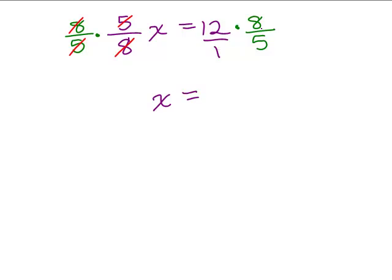So our answer is, when we multiply the numerators, 12 times 8, which is, let's see, I think that's 120. No, it's not. It's 96. Right. Okay. So it's 96 over 5.